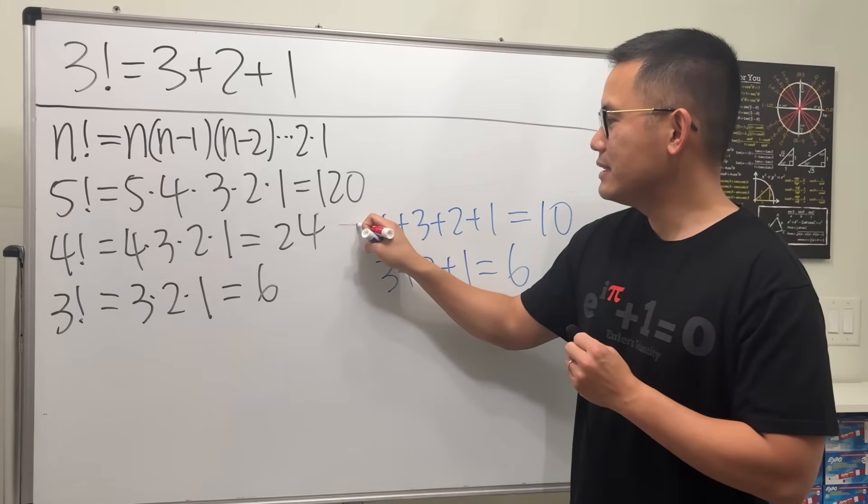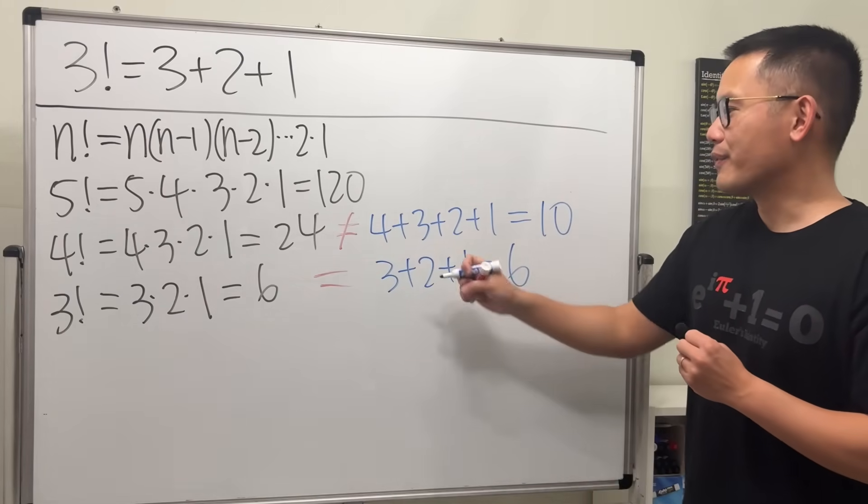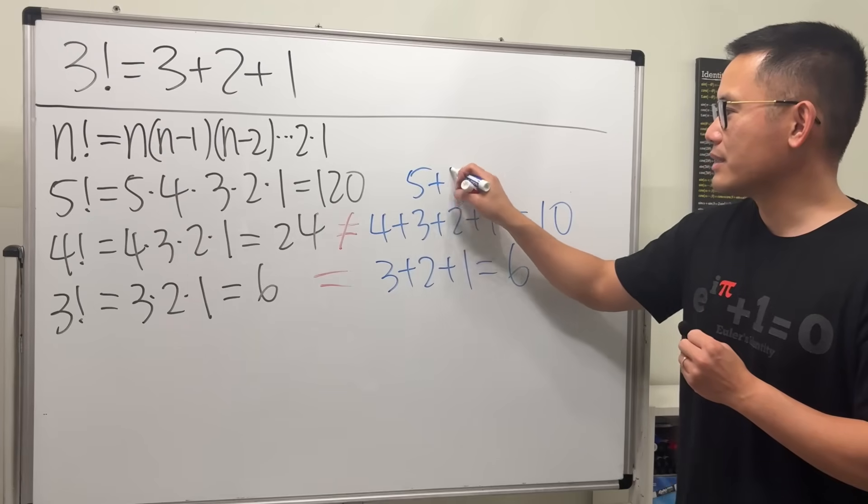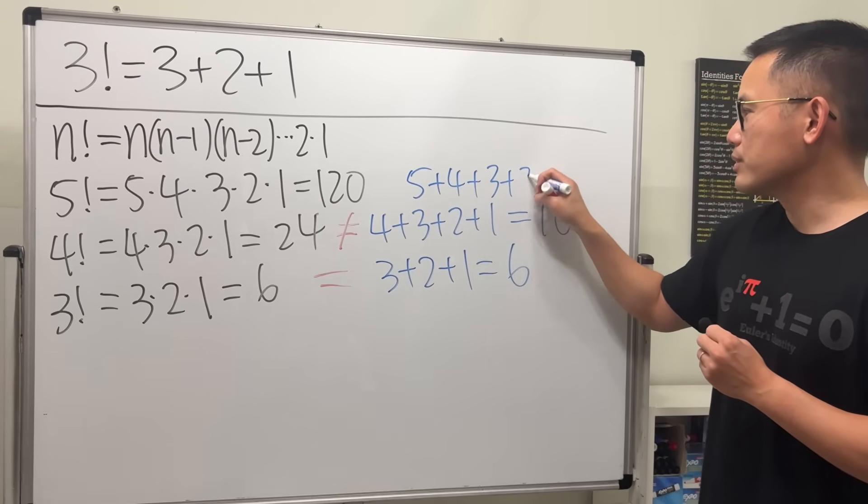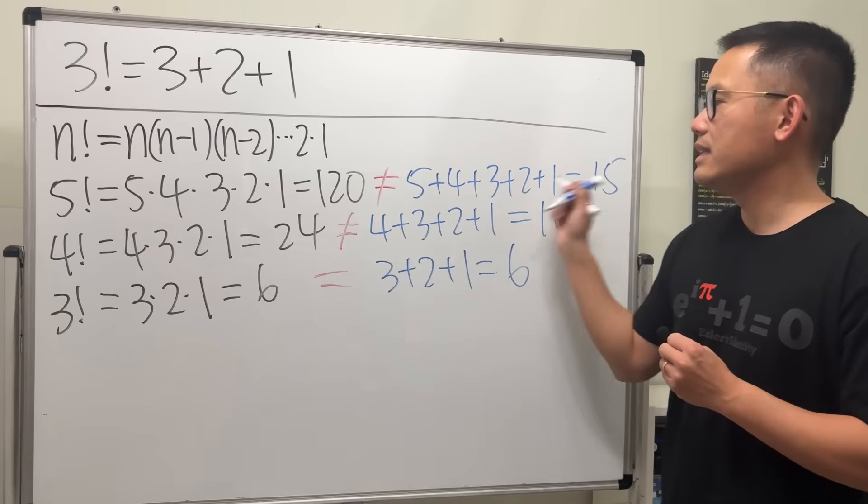Of course, these are not equal anymore, but they were equal earlier. And you can also do 5: 5 plus 4 plus 3 plus 2 plus 1, that's just 15, and of course they are not equal.